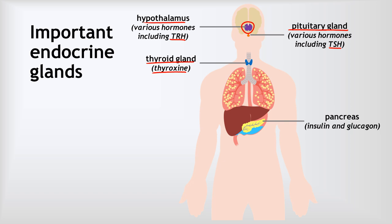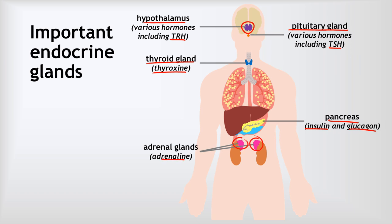Moving on, just below our liver, around our digestive system, we have the pancreas. The pancreas produces lots of different substances, but relevant to this video, it produces two hormones — insulin and glucagon — which are both involved in controlling our blood glucose concentration. If you've ever had that rush of excitement when you're in a dangerous situation, that is due to the effect of adrenaline, which is a hormone produced by the adrenal glands, which sit just on top of each of our two kidneys.